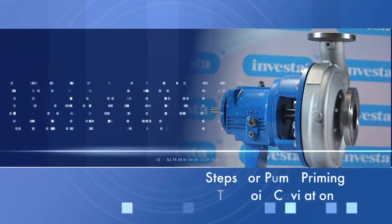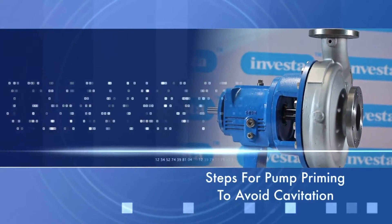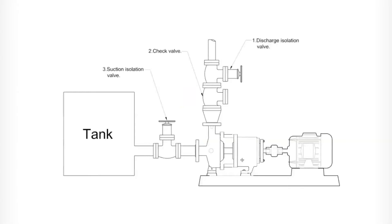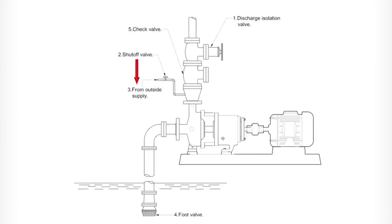Steps for pump priming to avoid cavitation: suction supply above the pump, and suction supply below the pump.